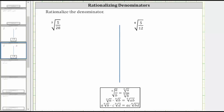We are asked to rationalize the denominators. Here we have the cube root of 5/28. The first step is to write the expression as an equivalent expression in the form of the cube root of five divided by the cube root of 28.